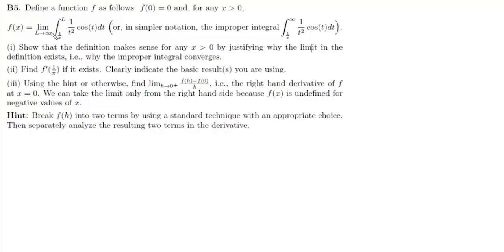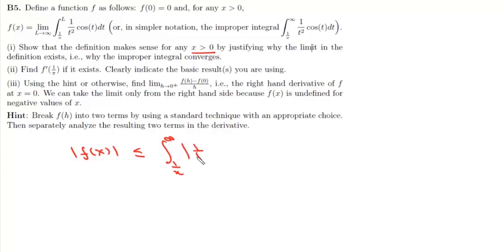In B5 we are given the function defined as the improper integral from 1/x to infinity of (1/t²)cos(t) dt. In the first part, for any x greater than 0, we need to show why this improper integral converges. Looking for absolute convergence, we can write |f(x)| ≤ ∫(1/x to ∞) |1/t² · cos(t)| dt, and since |cos(t)| ≤ 1, this is ≤ ∫(1/x to ∞) 1/t² dt.